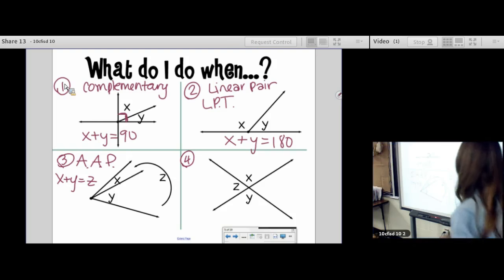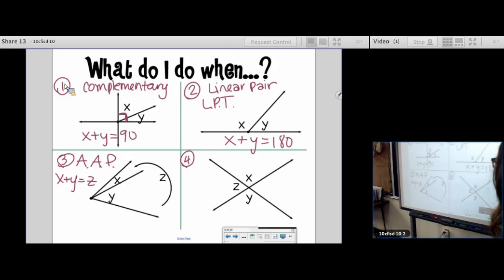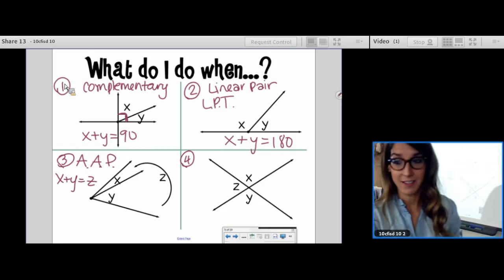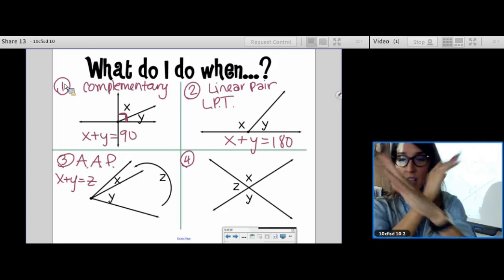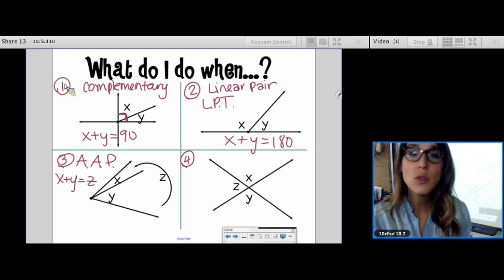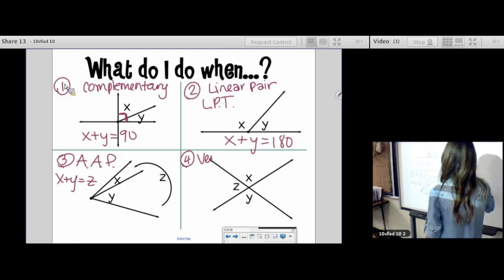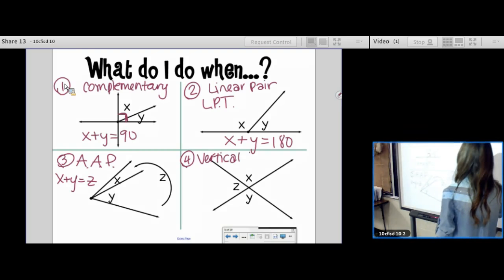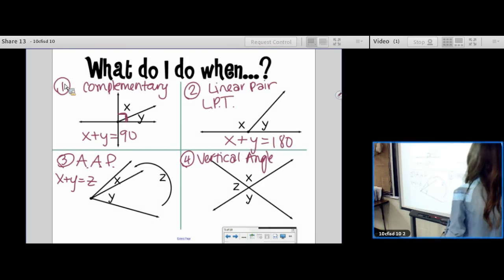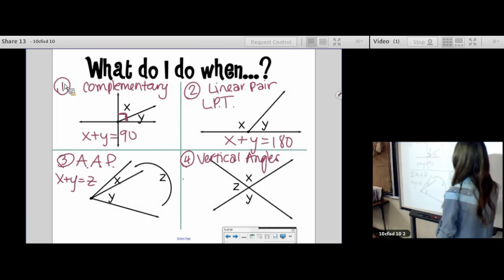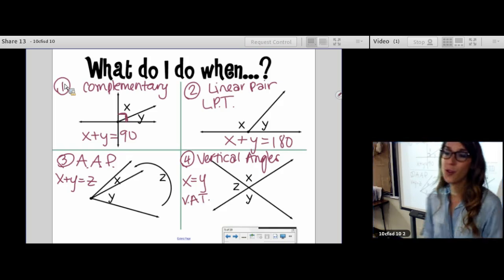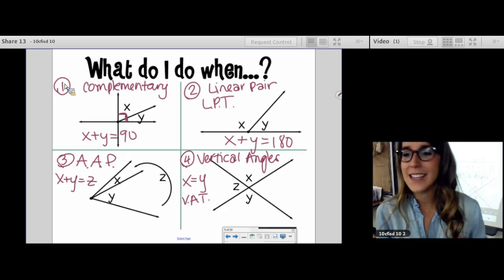Number four. I see some intersecting lines. I see the letter X. When you have the letter X, when you have two intersecting lines, you always have a pair of vertical angles. So what I would do first here is I would set x equal to y. I'm allowed to do that because of the vertical angle theorem. It says if two angles are vertical, then they are congruent.